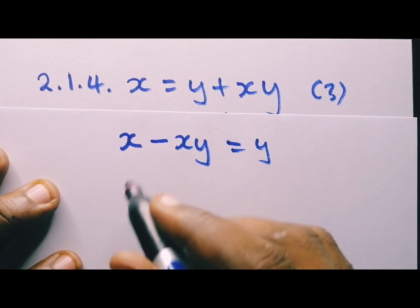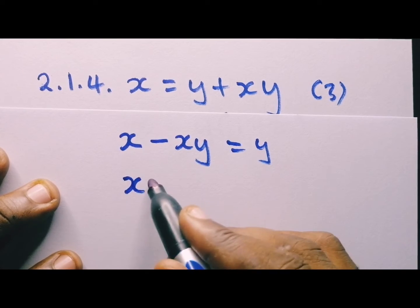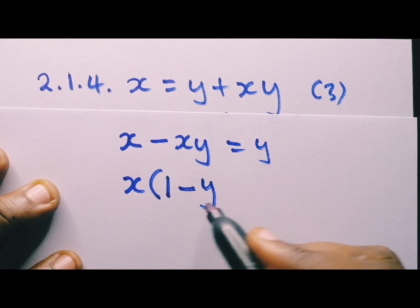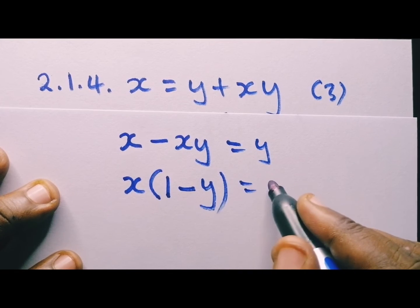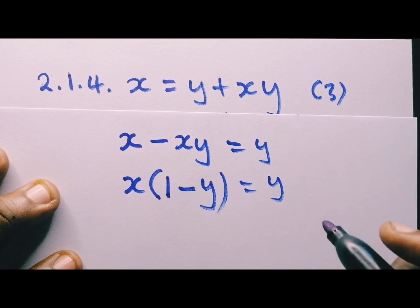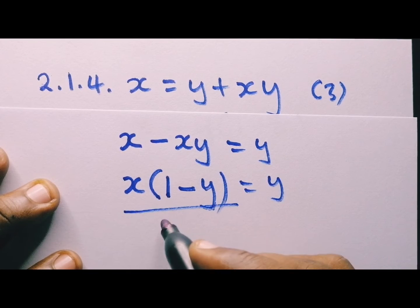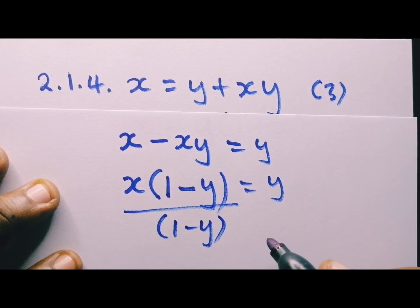We are not worried about this y, but we need x. X is here, x is here. We can take x outside. What is left here is 1 minus y equal to y. So to have x alone, we can also divide by 1 minus y of both sides.